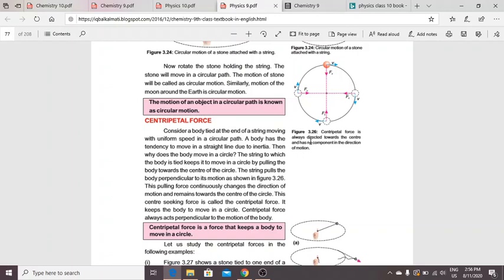keeps it moving in a circle by pulling the body towards the center of the circle. The string pulls the body perpendicular to its motion. So this pulling force continuously changes the direction of motion and remains towards the center of the circle. It is called centripetal force.